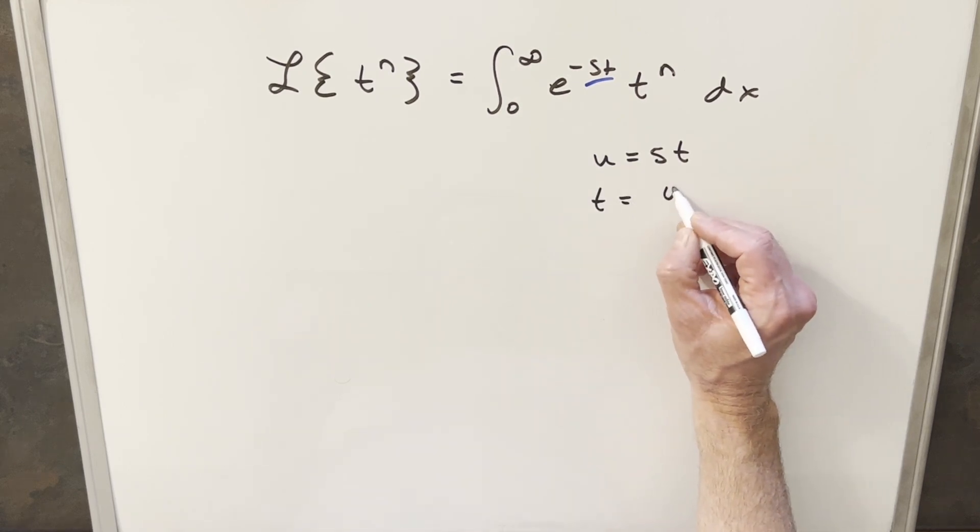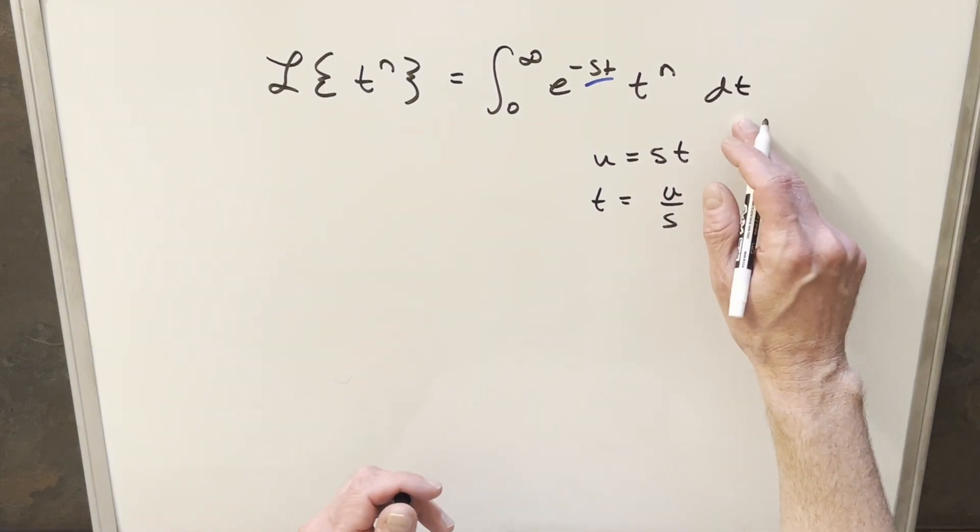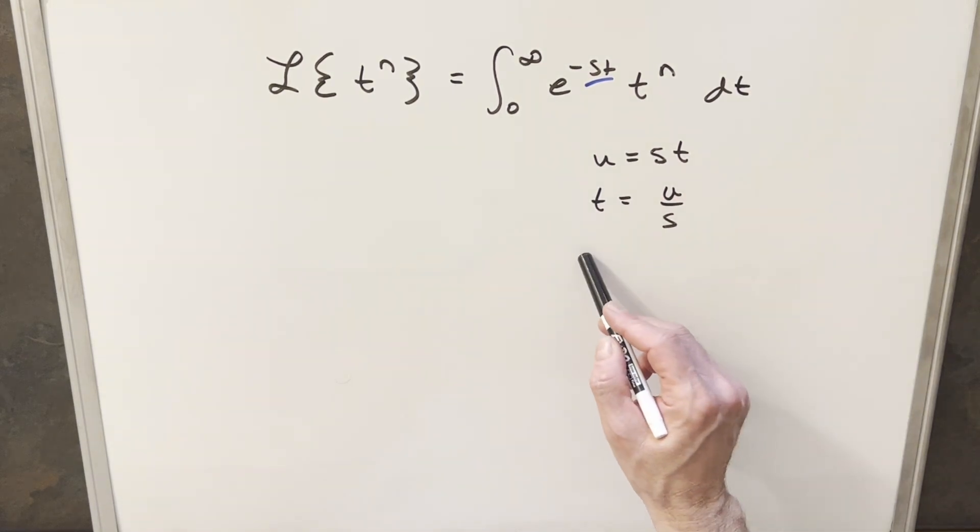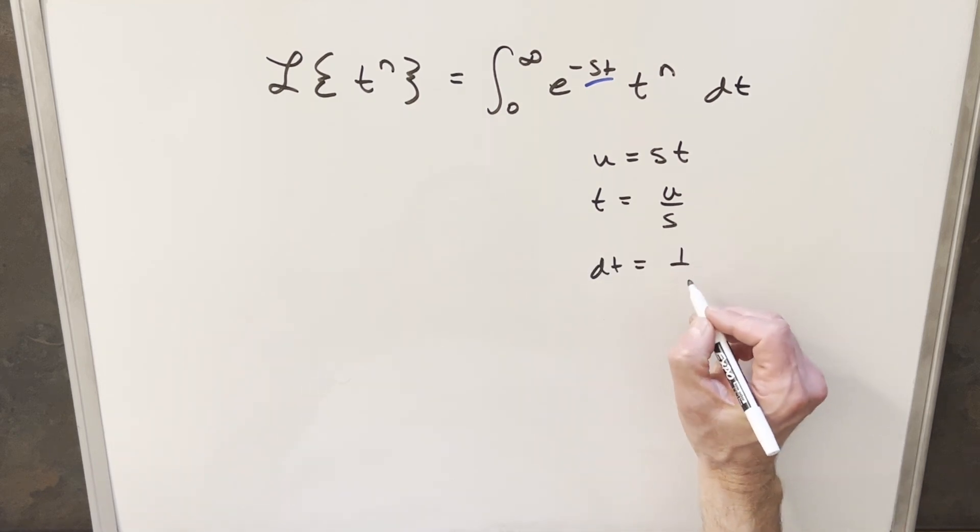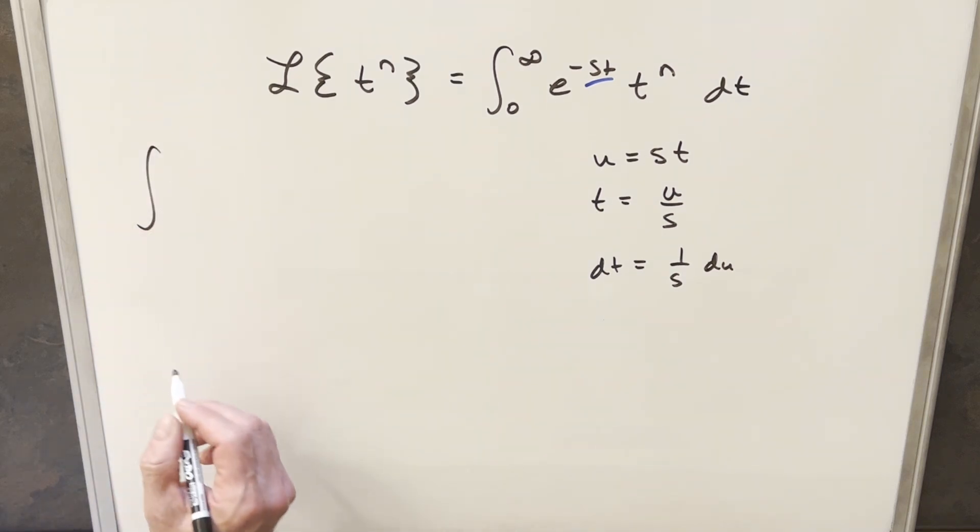Then I can solve for a value of t, so we can write t as u over s. Sorry, this should be a dt right here. So we'll take our derivative here and we'll get our dt value, so dt is just going to be 1 over s du.